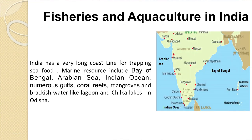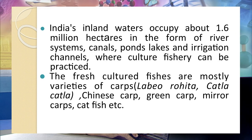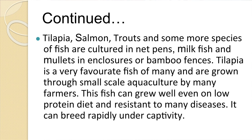India has a very large coastline for trapping seafood from resources like the Bay of Bengal and Arabian Sea. India's inland water occupies about 1.6 million hectares in the form of river systems, canals, etc. where we can practice fishery. Freshwater cultured fishes are mostly varieties of carps. Tilapia, salmon, trout, and some more species are cultured in net pens; milk fish and millets in enclosures or bamboo fences. Fish can grow well even on a low protein diet — that's one advantage — and are resistant to many diseases and can breed rapidly under captivity.